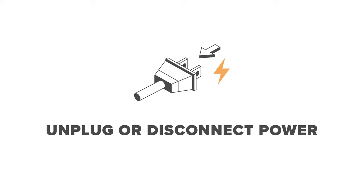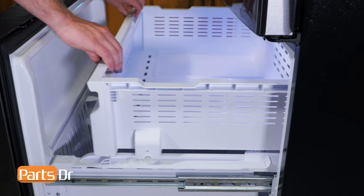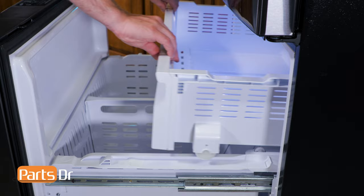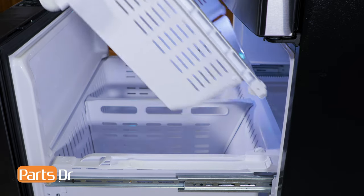For this repair, unplug or disconnect power to the refrigerator. The first thing that you'll need to do is open up the freezer drawer. Next, remove the upper freezer tray assembly by pushing it to the rear, lifting the wheels out of the slots, and then lifting up on the front to remove it.